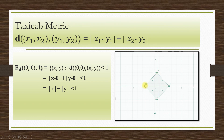This is the open ball with center (0, 0) and radius 1 with respect to the taxicab metric. The boundary points are excluded; we consider only the points strictly inside the figure. Hope you understood. See you next time. Bye.